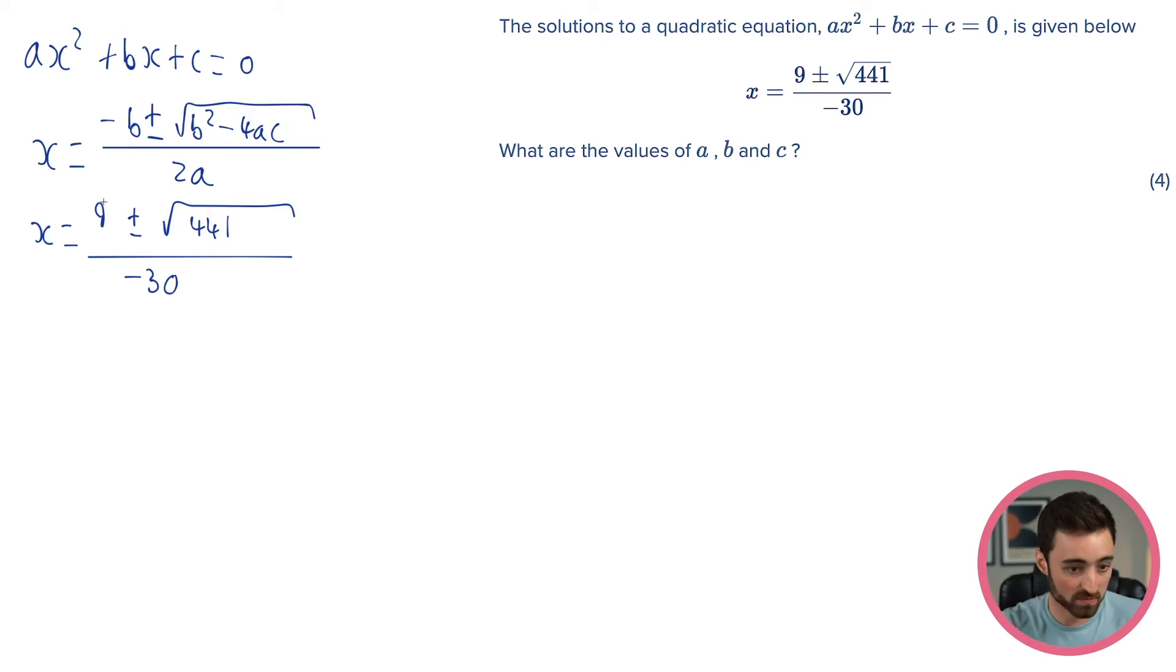We've got a ± square root, which would be our b² - 4ac inside it, all over a number, which would be our 2a. So all we actually have to do here is just compare each little component of this expression, work out my values of a, b, and c, and I'm done.